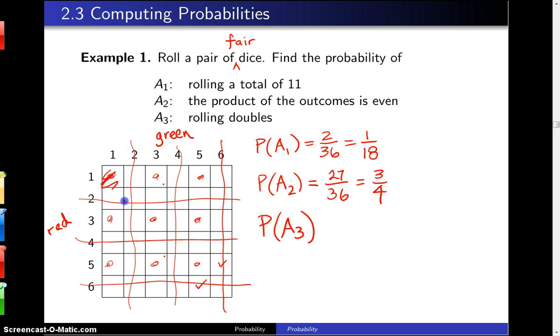Doubles are 1,1, 2,2, 3,3, 4,4, 5,5, and 6,6. And so that is 6 out of the 36 equally likely outcomes, and in lowest terms that is 1/6.